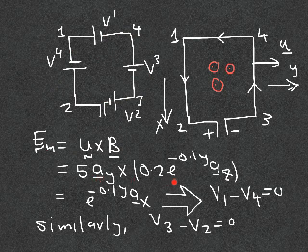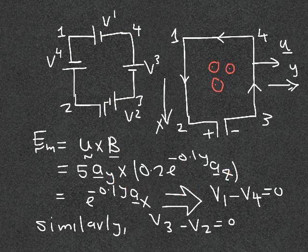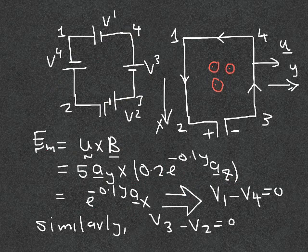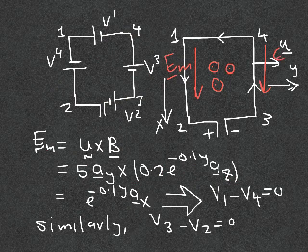Writing the general expression: u is 5 in the y-direction, B is 0.2·e^(−0.1y) in the z-direction. A_y × A_z gives us A_x, and 0.2 multiplied by 5 gives 1. So the induced field E_m is in the x-direction — pointing in this direction for all four wires.